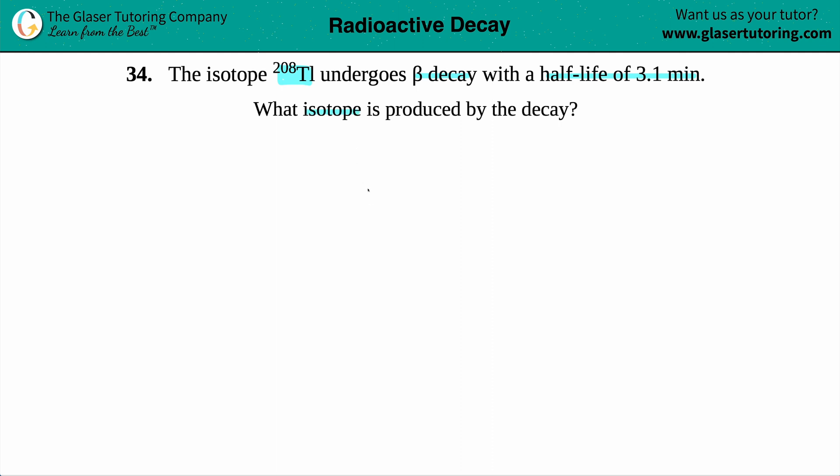Okay, so basically we have some radioactive decay. In this case they're telling us that we're going to decay beta style—this B stands for beta. Once this happens, the thallium will turn into a different isotope.